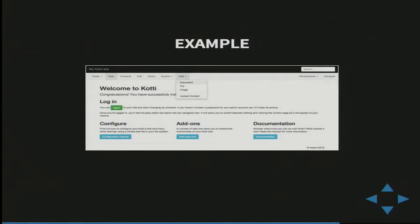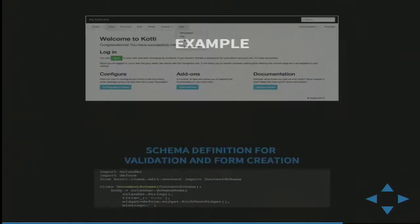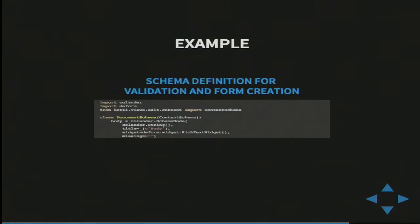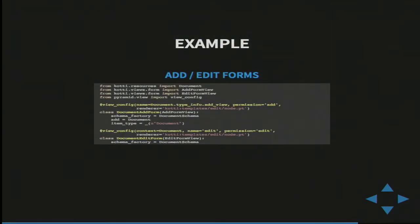A Colander schema is responsible for serialization, deserialization, validation, and form creation through Deform. It also inherits from the parent schema and only adds schema nodes provided by the custom content class. The add and edit forms are plain Pyramid views configured by the view_config decorator. The actual form rendering and validation is provided by the base classes, so you don't have to write a single line of code for that unless you want something done differently. And what you see here is a complete and working example — there's nothing left out.